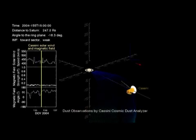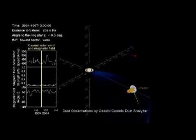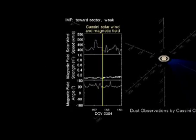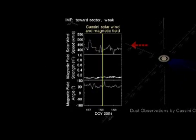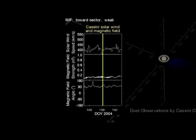In this depiction, the left panel shows the interplanetary magnetic field and solar wind velocity, measured by other instruments on Cassini. The solar wind speed is shown in the top panel, the magnetic field strength in the middle panel, and the direction of the magnetic field at the bottom.